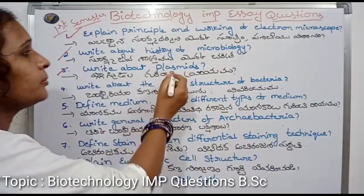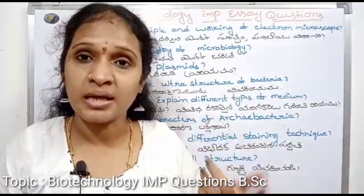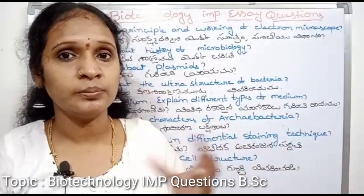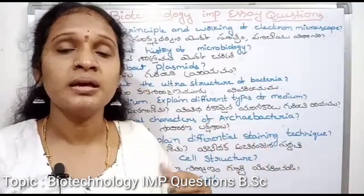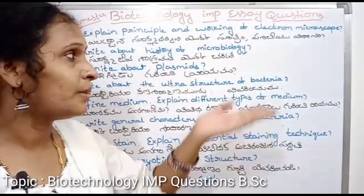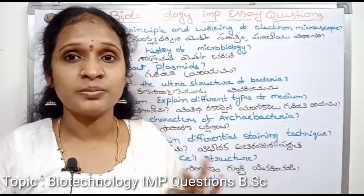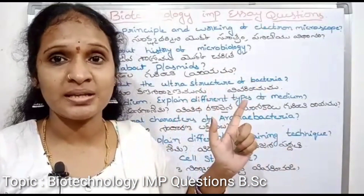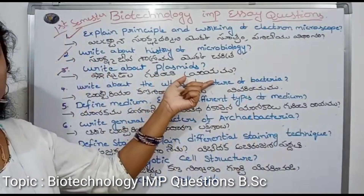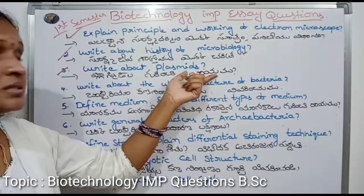Write about plasmids and their different types. These include PBR322, PUC19, and PUC101. These are called artificial plasmids and natural plasmids. Also cosmids, bacteriophages, etc. Plasmids are described by their general characters.